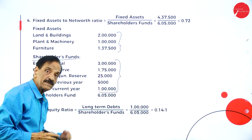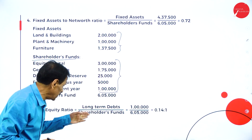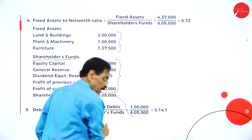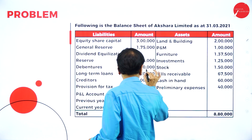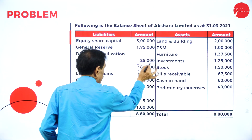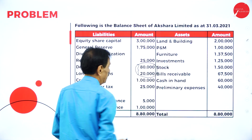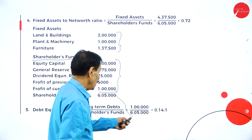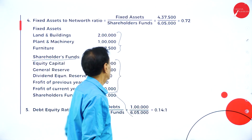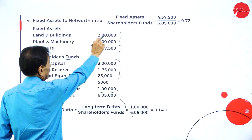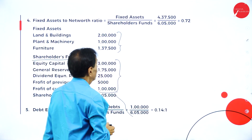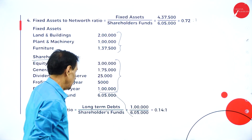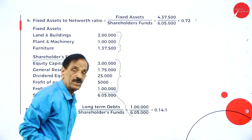Debt equity ratio: long term debt divided by shareholders fund. Shareholders fund is already calculated as 6,05,000. Long term debt — debentures 80,000 plus long term loan 20,000 — equals 1,00,000. Apply: 1,00,000 divided by 6,05,000 = 0.14 is to 1. Fixed asset to net worth ratio is 0.72 is to 1; debt equity ratio is 0.14 is to 1.